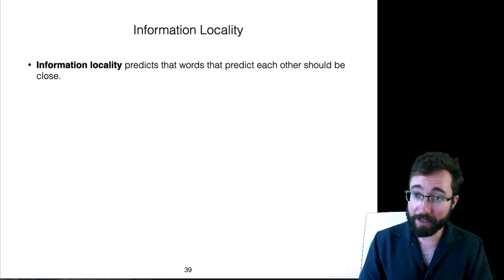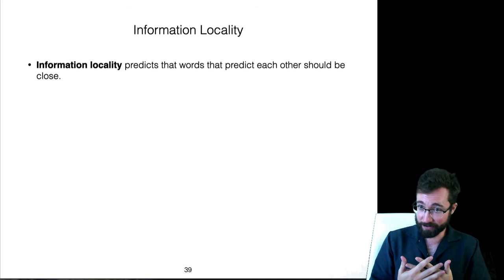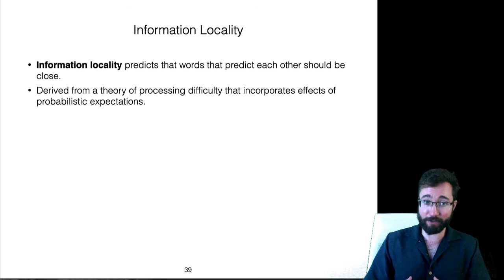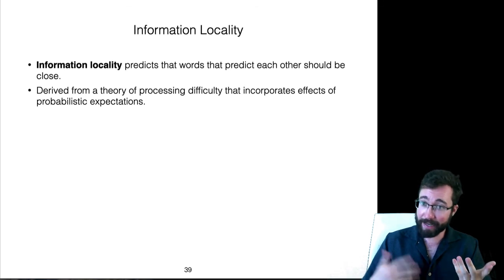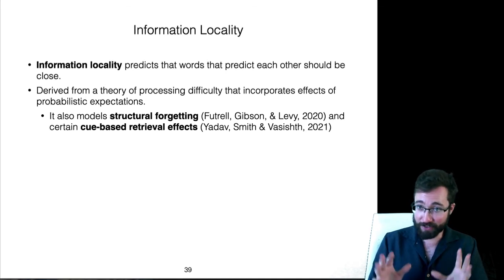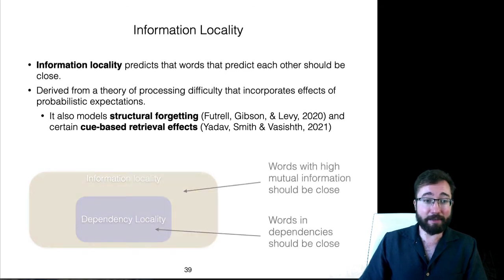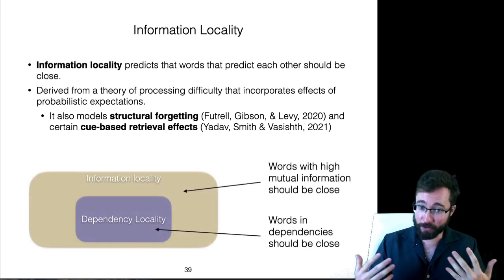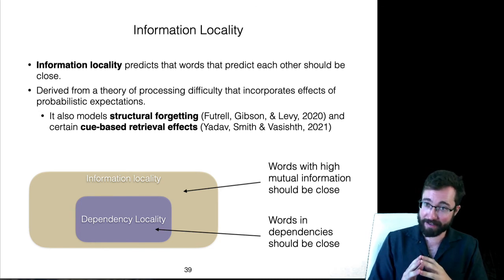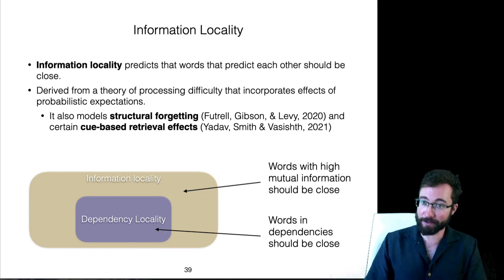This processing theory predicts that words that predict each other should be close to each other to avoid processing difficulty — derived from a theory incorporating effects of memory and probabilistic expectations. You can check the referenced papers for evidence that this also captures a number of other psycholinguistic phenomena. Dependency locality is actually subsumed into information locality, and in the next section I'll be presenting evidence substantiating this claim and claims of information locality beyond dependency locality.